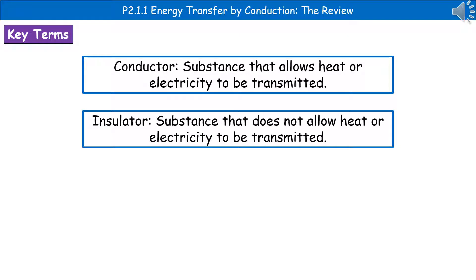Welcome to our review on energy transfer by conduction. The first thing we need to know are the definitions of two key words. First is a conductor, which is a substance that allows heat or electricity to be transmitted. Second is an insulator, which is a substance that does not allow heat or electricity to be transmitted.